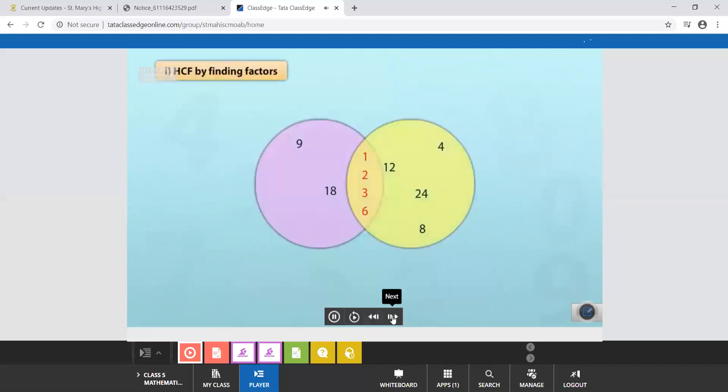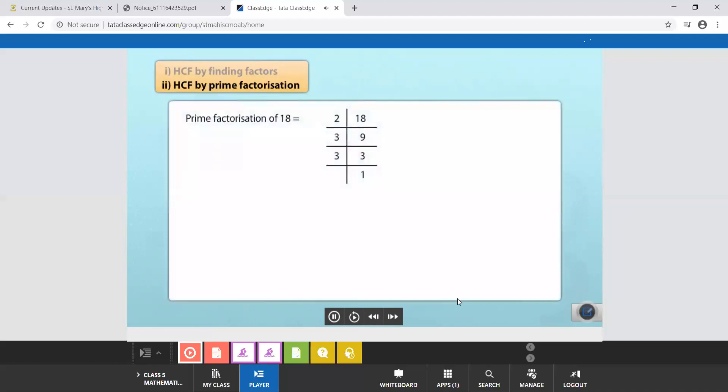Discovering HCF by finding factors is fine when the numbers are small and it is easy to find their factors. For large numbers we can use the prime factorization method. When we find the prime factorization of 18 and 24,